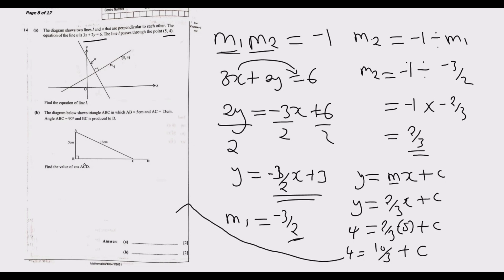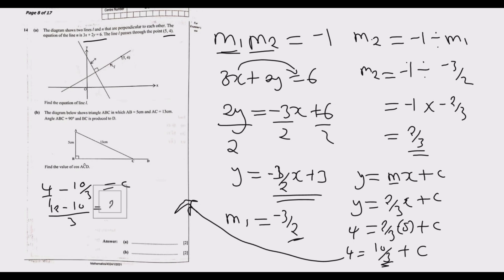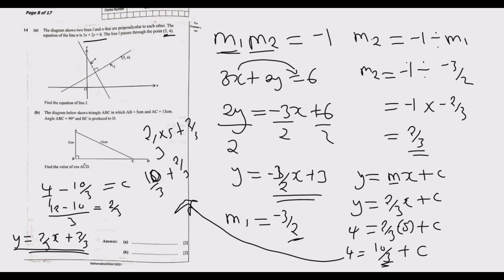Solving for c: c equals 4 minus 10 over 3. Converting 4 to thirds gives 12 over 3 minus 10 over 3, which equals 2 over 3. So c equals 2 over 3. Therefore the equation of line L is y equals 2 over 3 x plus 2 over 3.